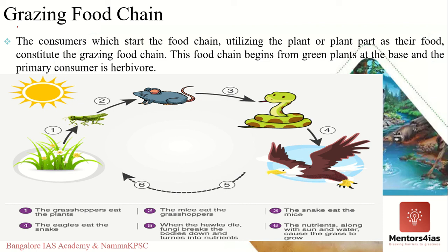The grazing food chain always starts with producers. Looking at this image, the food chain starts with plants, which are eaten by a grasshopper, then mice, then a rat, then a snake, and then an eagle. When the eagle dies, its body is decomposed and the nutrients made available are used by plants. The direction of energy flow is always single and unidirectional. In terrestrial ecosystems it starts with plants, and in aquatic ecosystems with phytoplankton.